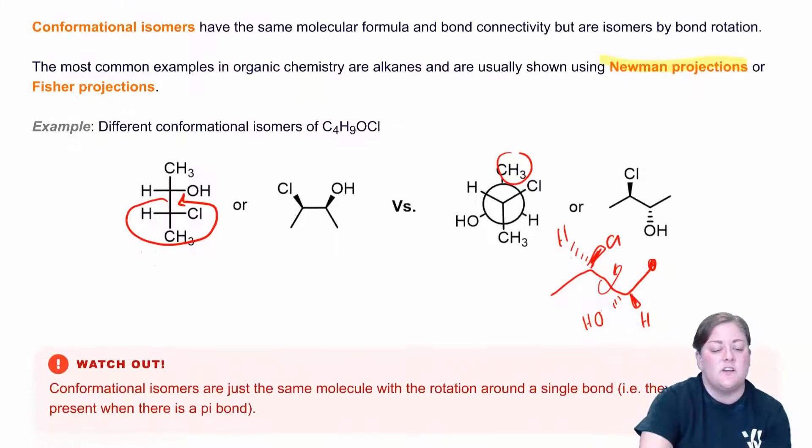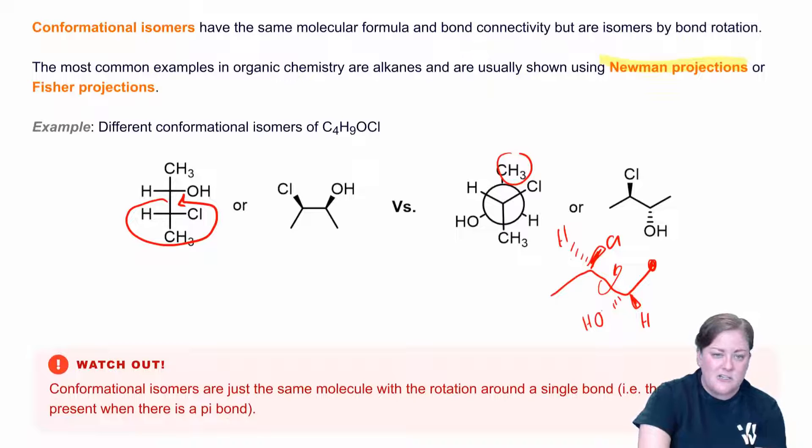Now conformational isomers are just the same molecule with rotation around the bond. And here we've given some tricky examples with some rotation, but the most common scenarios for these type of isomers that you're going to see is going to be cyclohexane rings, which we're going to talk about in the carbohydrate section, and energetics, which I'm about to talk about now.